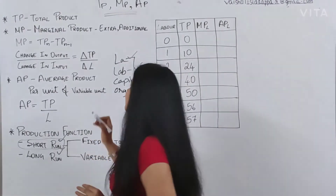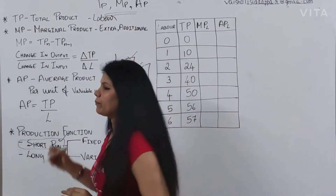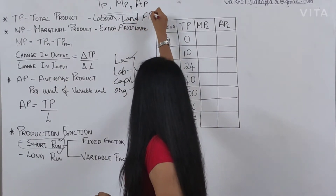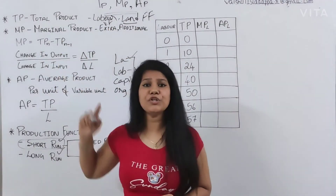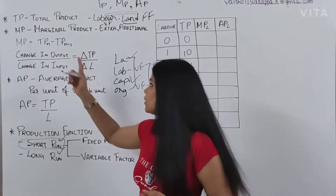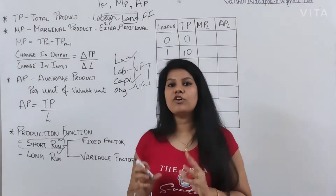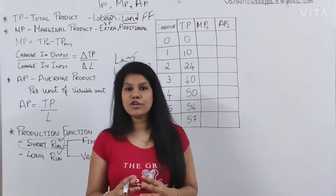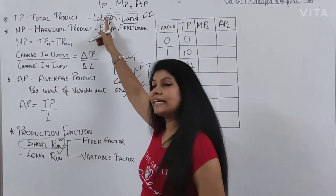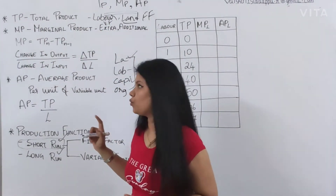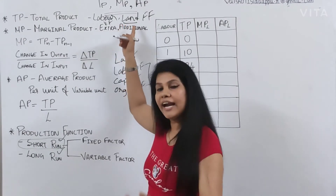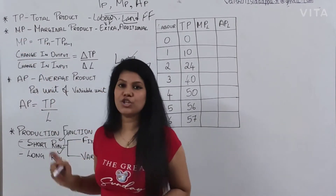For the analysis in your textbook, they have considered only two factors of production: labour and land. Land is considered as a fixed factor and labour as the variable factor. To produce the total product, how many labours are you using and how much production is increasing — the total production in a given time period is called total product. Marginal product talks about extra, additional, individual contribution. When extra labours are added, what will be the extra contribution each labour gives you? That is marginal product — additional contribution given by the additional labour.